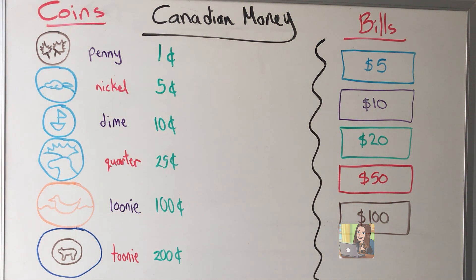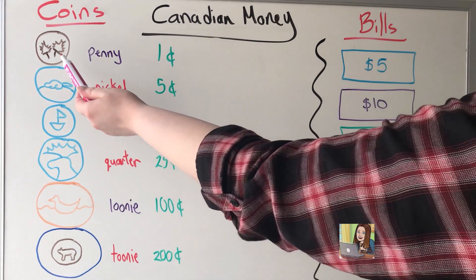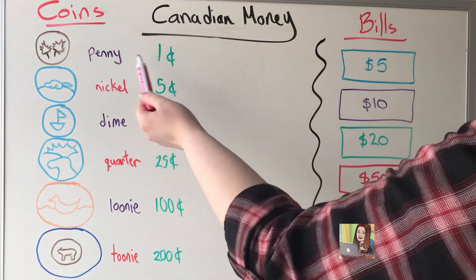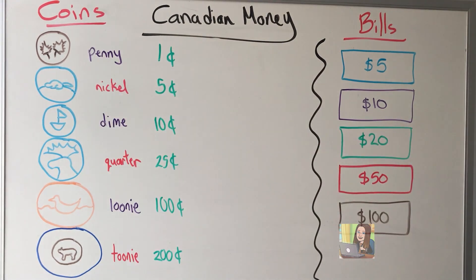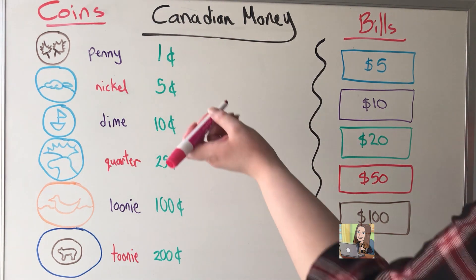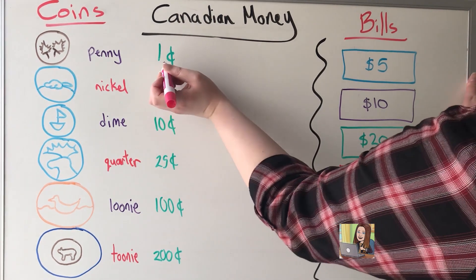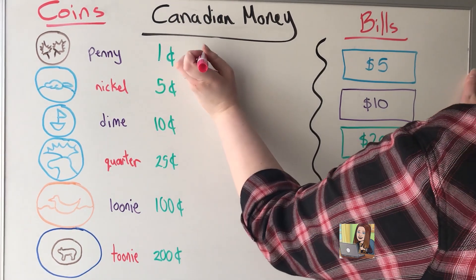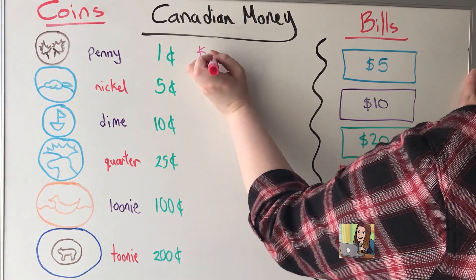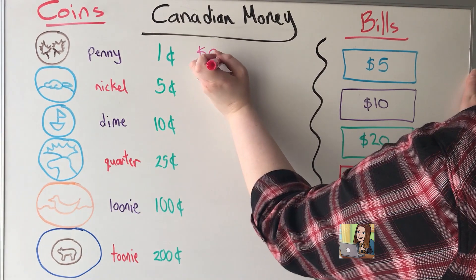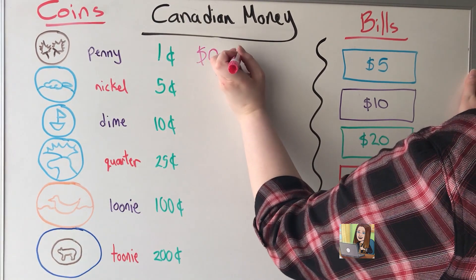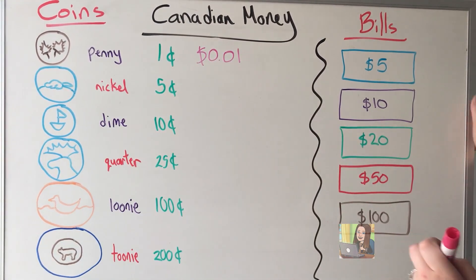We're going to start by looking at the penny, the one with the maple leaves on it. We don't use the penny anymore — it actually costs more to create it than what it was worth. When we did use it, it was worth one cent, or written in dollars, $0.01.